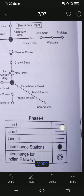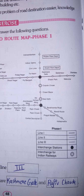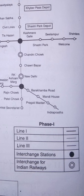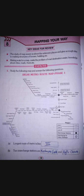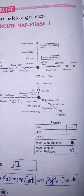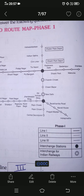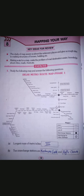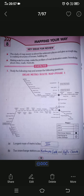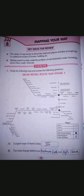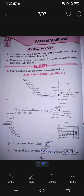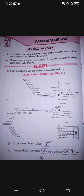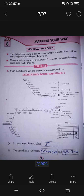Line One is marked with a broader dark bold black line on the map. Line Two is marked with a lighter color — this straight line is Line Two. Line Three is a simple plain black line. Interchange stations are marked with filled black spots — those two black spots are interchange stations. Interchange for Indian Railways is marked with a non-filled (open) circle.